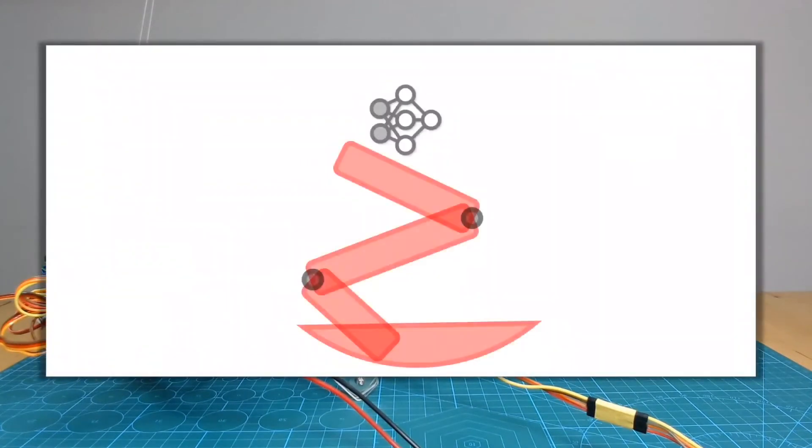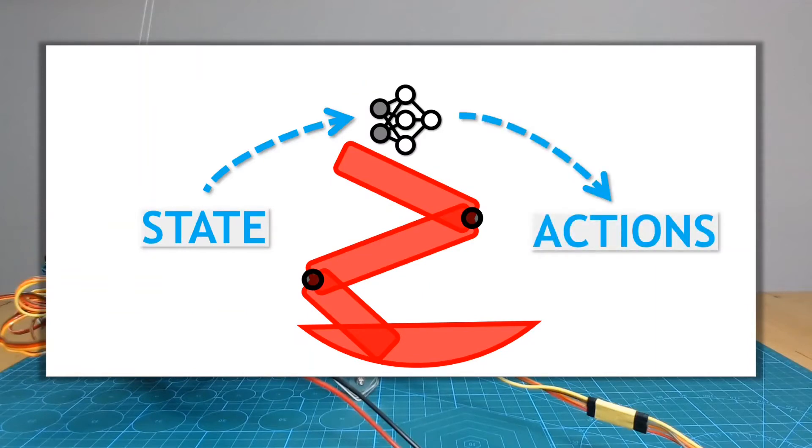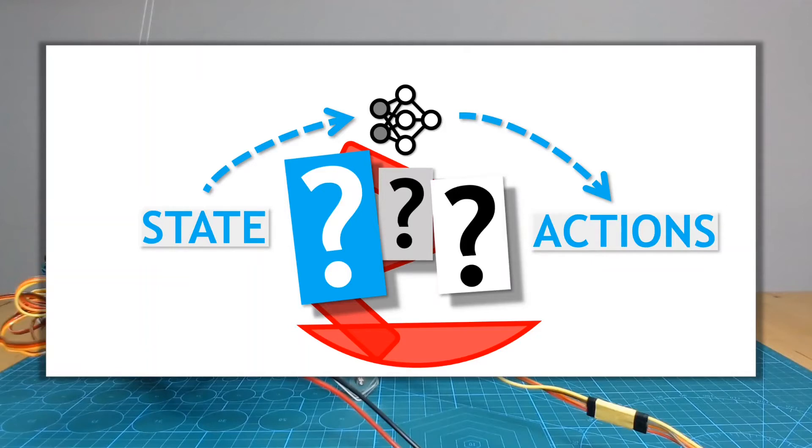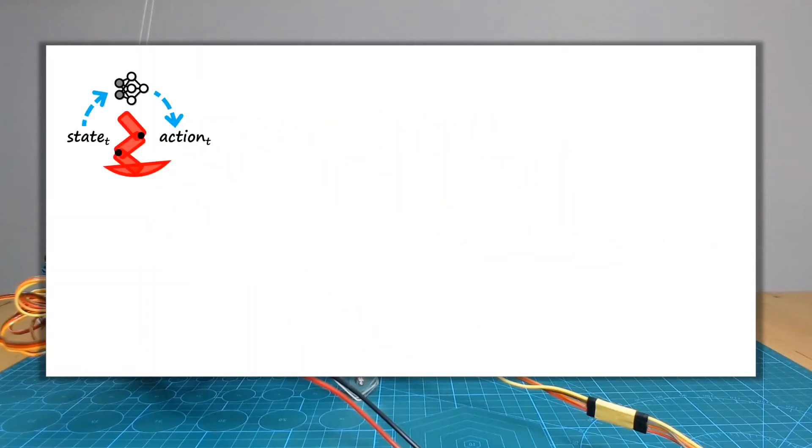So the policy is basically a mapping from the legs' current state to the next set of actions. So how can we train this policy to balance our legs? Well, the simplest option, assuming we already have some expert balancing algorithm, or maybe an expert human pilot, is to let them demonstrate their balancing skills.